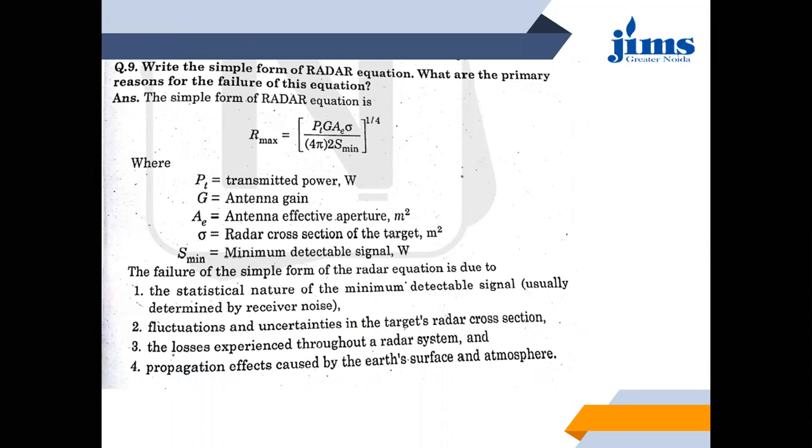Second, fluctuations and uncertainties in the target's radar cross-section. So the cross-section can be uncertain, fluctuation can occur. Sometimes the target is big or small, so when it's big or small it will fail.